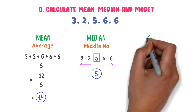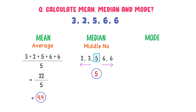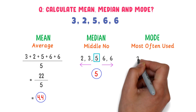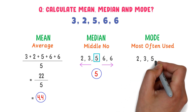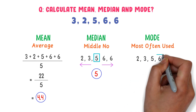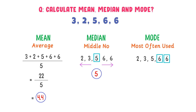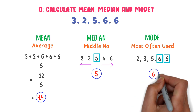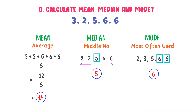Thirdly, what about mode? We know that mode is the most often used number. We can see that 6 is used twice in this data set. Hence, the mode of this data set is 6. By this way, we can easily calculate mean, median and mode of any data set.